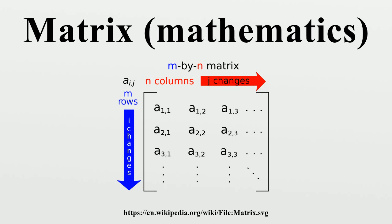Matrix multiplication satisfies the rules (AB)C equals A(BC), and C(A plus B) equals CA plus CB, as well as (A plus B)C equals AC plus BC. Whenever the size of the matrices is such that the various products are defined, the product AB may be defined without BA being defined. Even if both products are defined, they need not be equal — i.e., generally AB does not equal BA, meaning matrix multiplication is not commutative. Besides ordinary matrix multiplication, there exist other less frequently used operations on matrices that can be considered forms of multiplication, such as the Hadamard product and the Kronecker product. They arise in solving matrix equations such as the Sylvester equation.